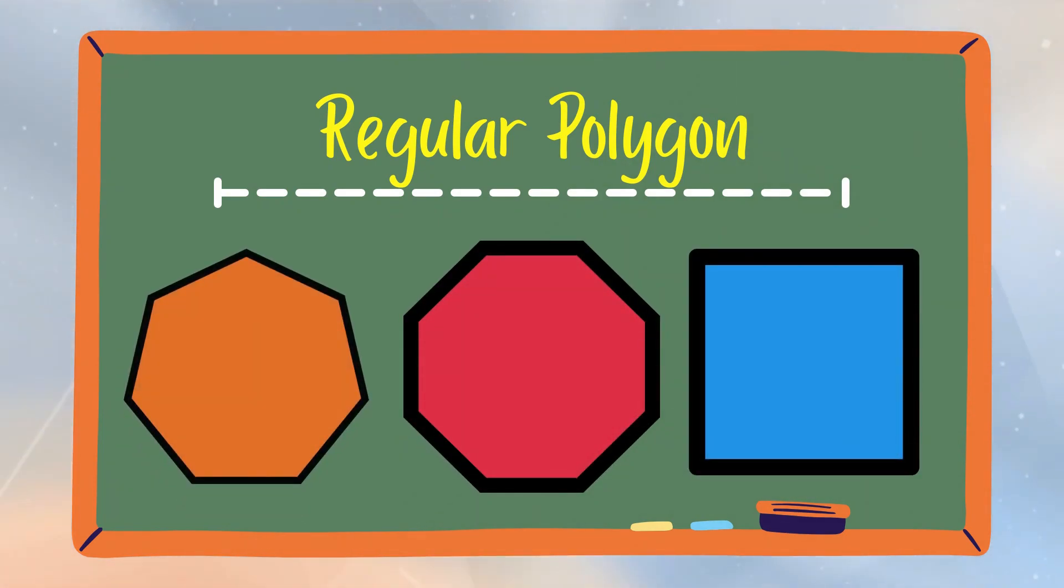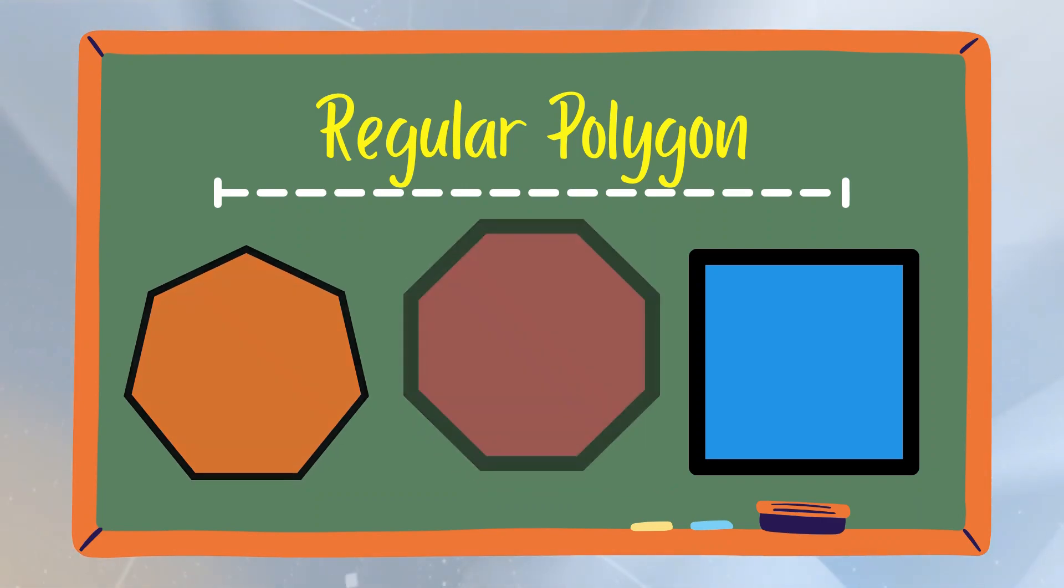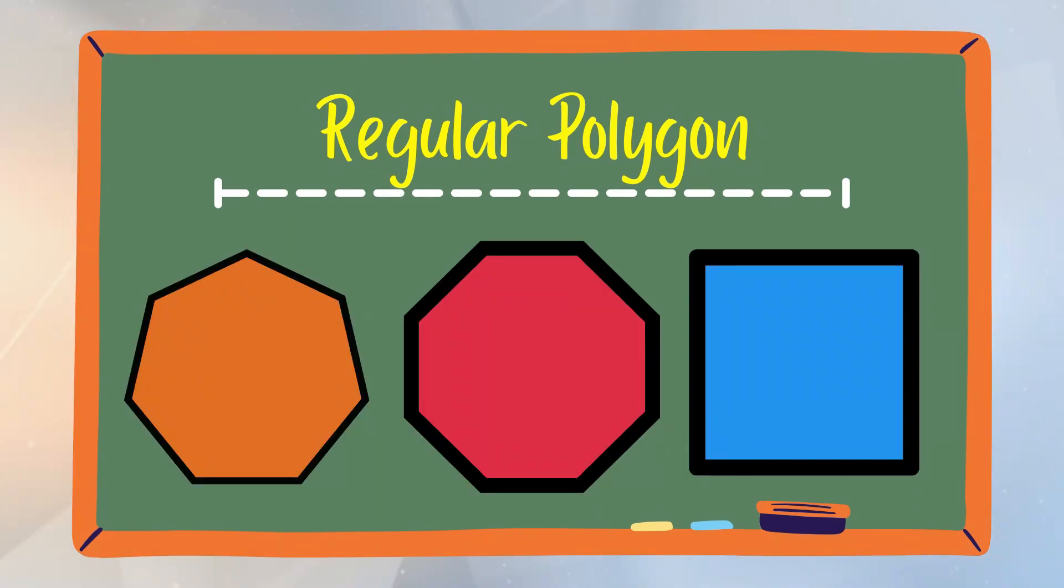There are different types of regular polygons. The heptagon, octagon, and the quadrilateral square on your screen are polygons that show the same measurement of length and angles. They are the examples of regular polygons.